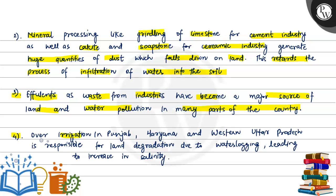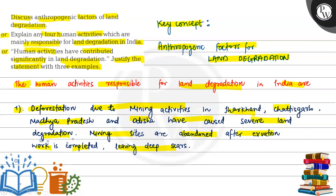The fourth point is over-irrigation in Punjab, Haryana and western Uttar Pradesh, which is responsible for land degradation due to waterlogging, leading to increasing salinity. In these states, where there was a green revolution, over-irrigation has caused waterlogging. So these four are the anthropogenic factors responsible for land degradation.